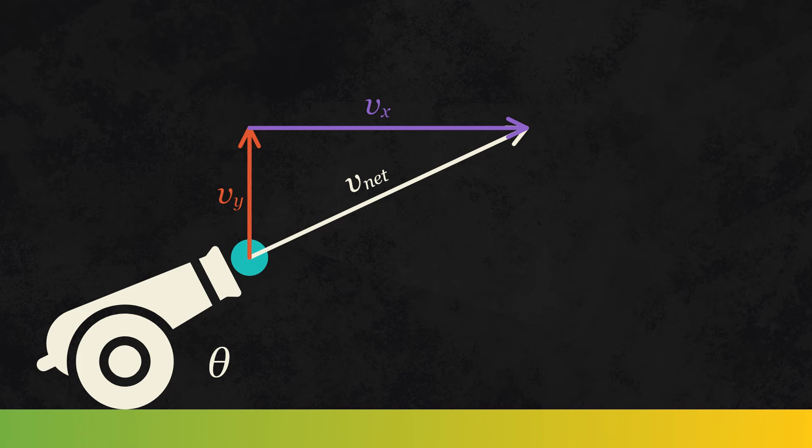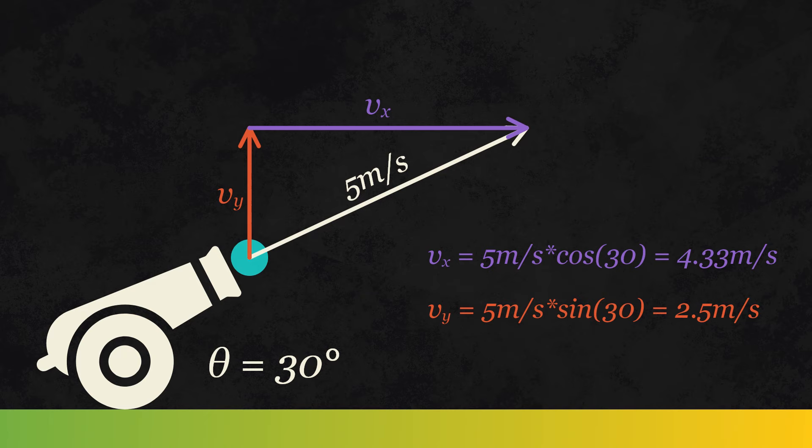For example, if an object is launched at 5 meters per second with an angle of 30 degrees, its speed in the x direction is defined by 5, the magnitude of the vector, times cos of 30 degrees, the angle, and its y component is defined by 5 times sine of 30 degrees.